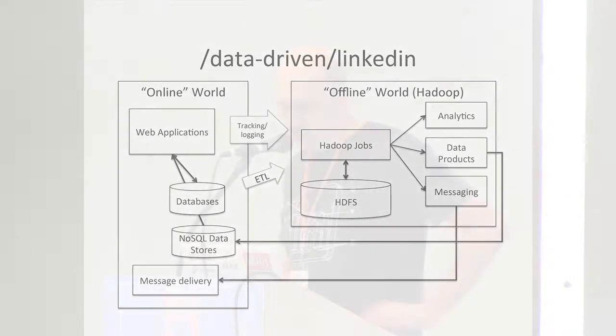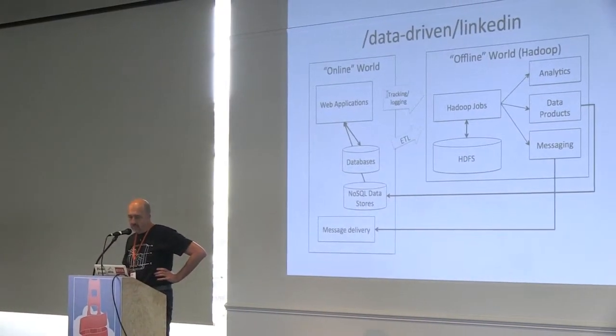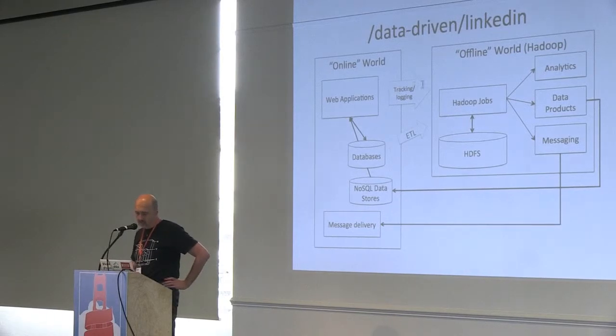We have a so-called online world, which is services that users are interacting with. And we have a so-called offline world, which runs mainly Hadoop but other systems as well. There's a lot of data coming from the online service into the offline. This data comes via ETL processes from the databases, and there's data coming from tracking and logging of the services. All of this data ends up in the Hadoop file system, HDFS.